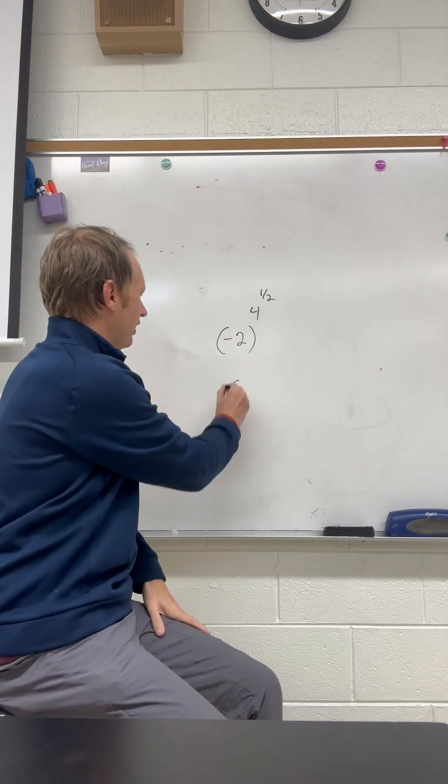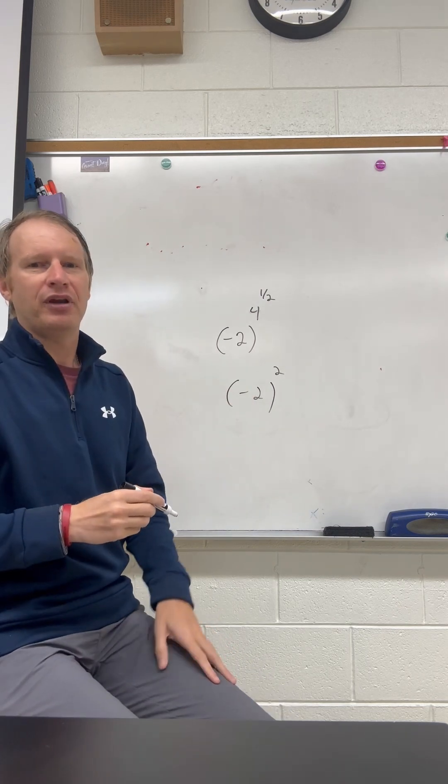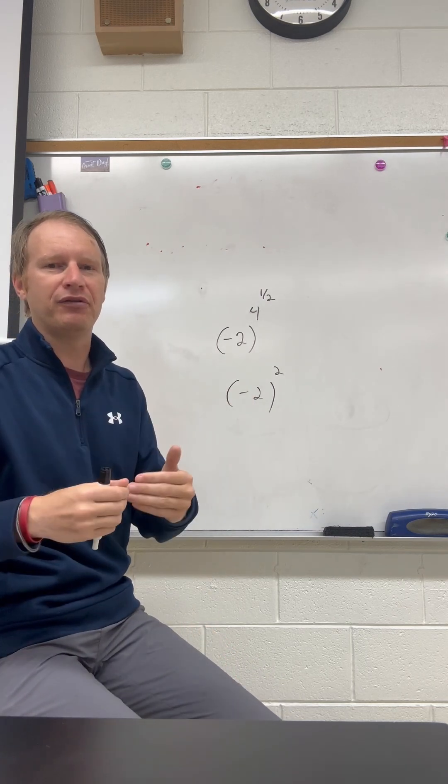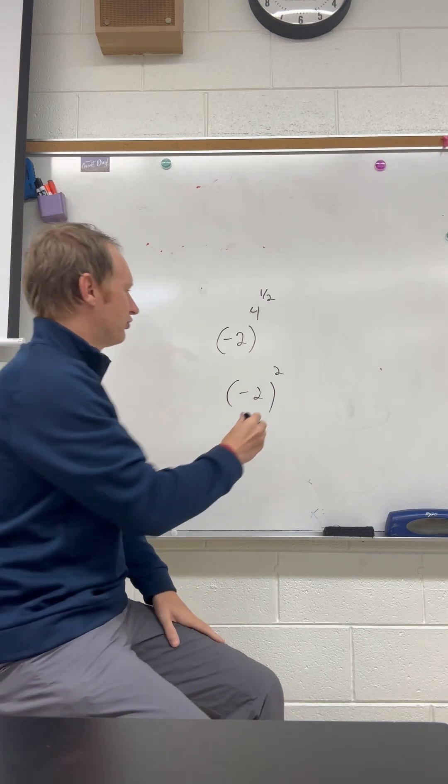So this becomes negative 2 squared. And negative 2 squared is going to be negative 2 times negative 2, which is 4.